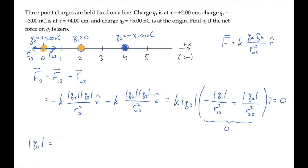Setting that equal to zero lets us solve for the magnitude of q1. It equals the square of the ratio of the distances times the magnitude of q2.